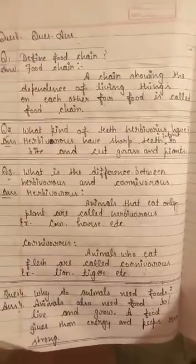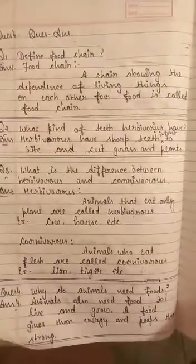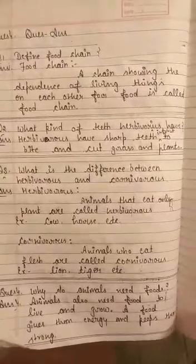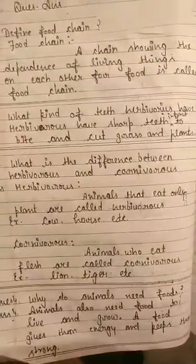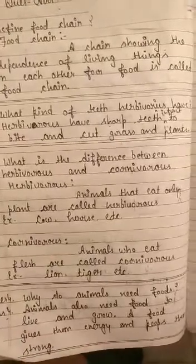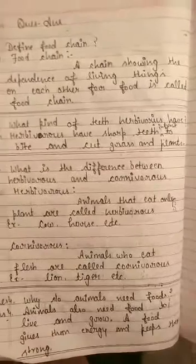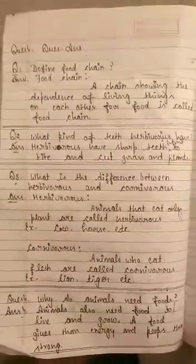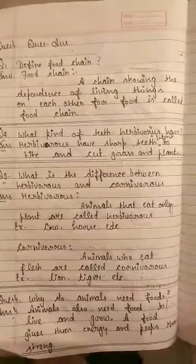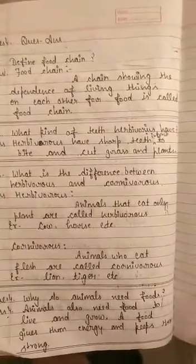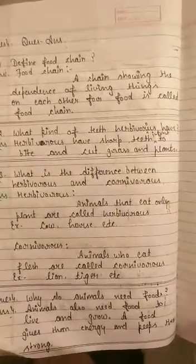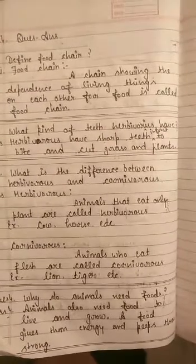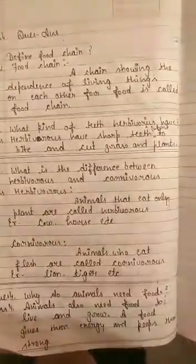Herbivores have sharp teeth in front to bite and cut grass and plants. Question number 3: what is the difference between herbivores and carnivores? Herbivores — animals that eat only plants are called herbivores; example: cow, horse, etc. Jo janvar keval plants khate hain, woh herbivores kehlate hain. Carnivores — animals who eat flesh are called carnivores; example: lion, tiger, etc. Jo janvar mas khate hain, carnivores kehlate hain.